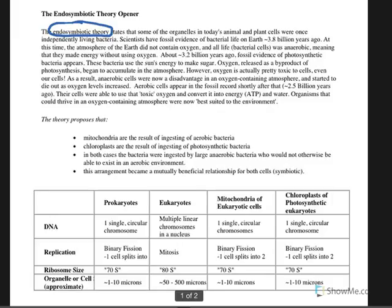So the endosymbiotic theory tries to explain how we got some of the more complex cells. It's basically trying to say that some of the organelles in today's animal and plant cells, those more complex cells, were once independently living bacteria.